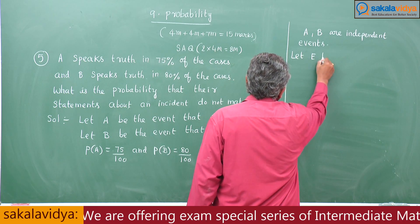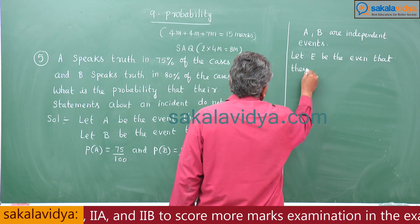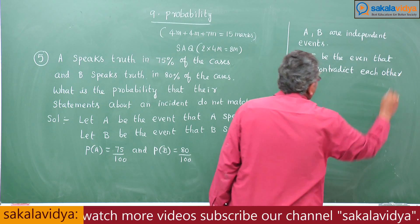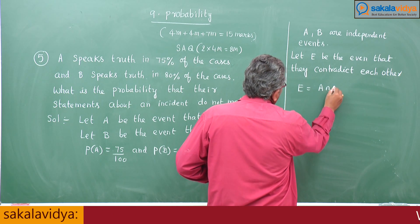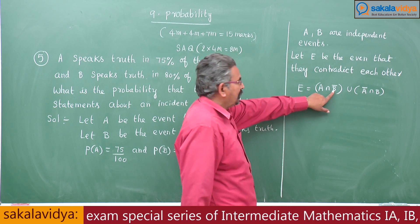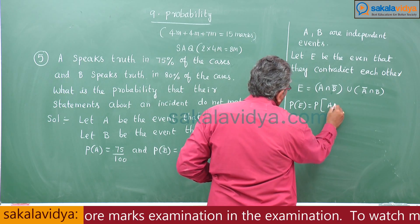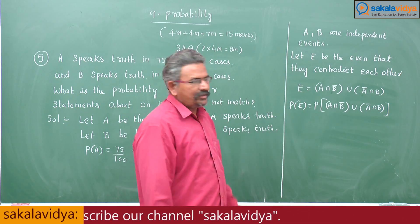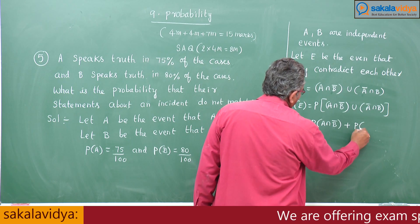Let E be the event that they contradict each other. E equals: A speaks truth and B speaks lie, union A speaks lie and B speaks truth. That means P of E equals P of A intersection B-bar, union A-bar intersection B. We have to find out P of E.